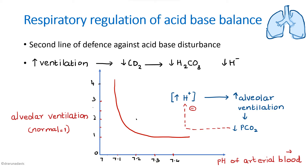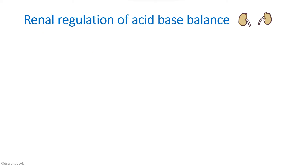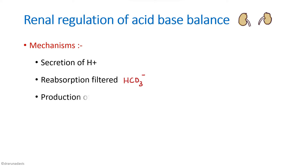Respiratory regulation is not heavily tested in exams, so we will move on to the third type of regulation — the renal system — which is very important for exams. The main role of kidneys in acid-base balance involves three mechanisms: first, secretion of H+; second, reabsorption of filtered bicarbonate; and third, production of new bicarbonate. We will see each one by one.